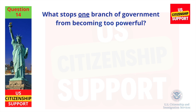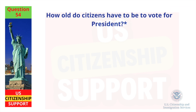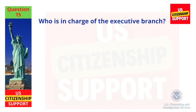What stops one branch of government from becoming too powerful? Checks and balances. How old do citizens have to be to vote for president? Eighteen and older. Who is in charge of the executive branch? The president.